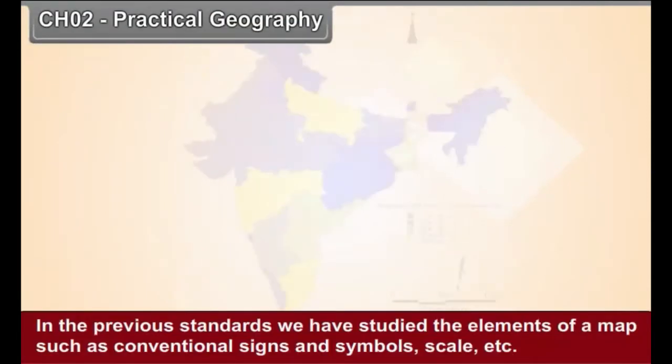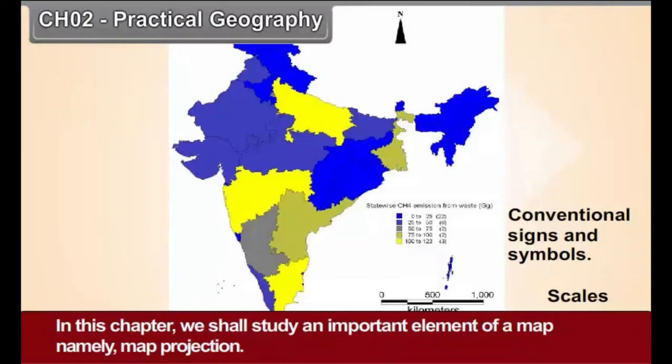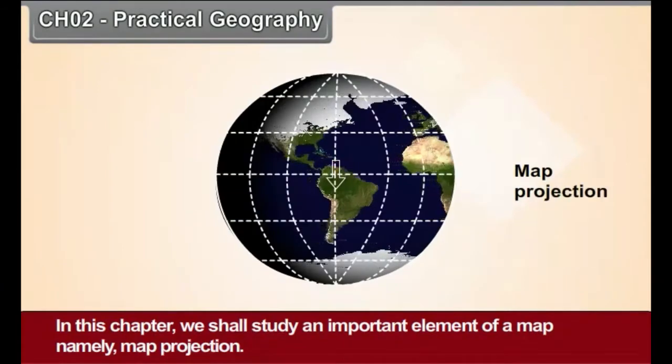Chapter 2: Practical Geography. In the previous standards, we have studied the elements of a map such as conventional signs and symbols, scale, etc. In this chapter, we shall study an important element of a map, namely map projection.